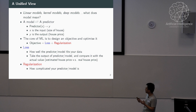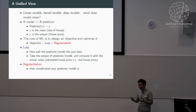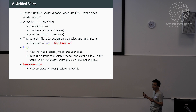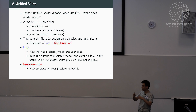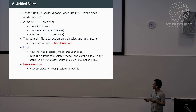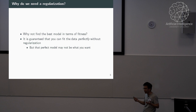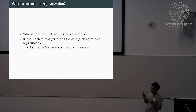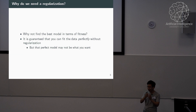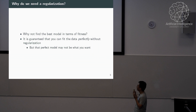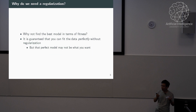The regularization term cares about how complicated your model is. We have conceptually simple models like linear models and very complicated ones like deep neural networks. The regularization term says: if possible, use a simpler model. Why? Because machine learning is such a powerful tool — you can always find a model that fits your data perfectly, which is proved mathematically. But that perfect model may not be what you really want.